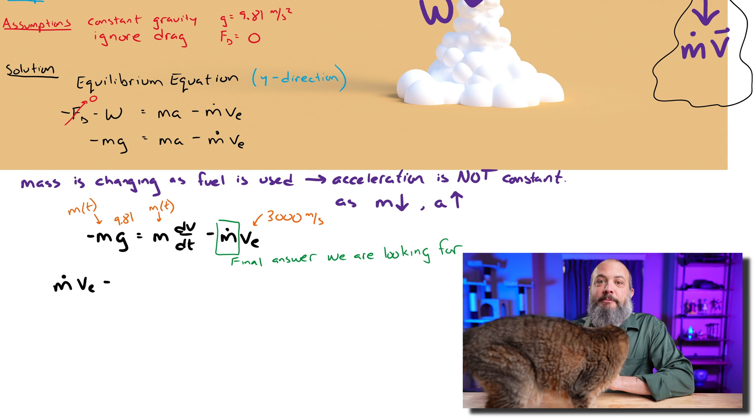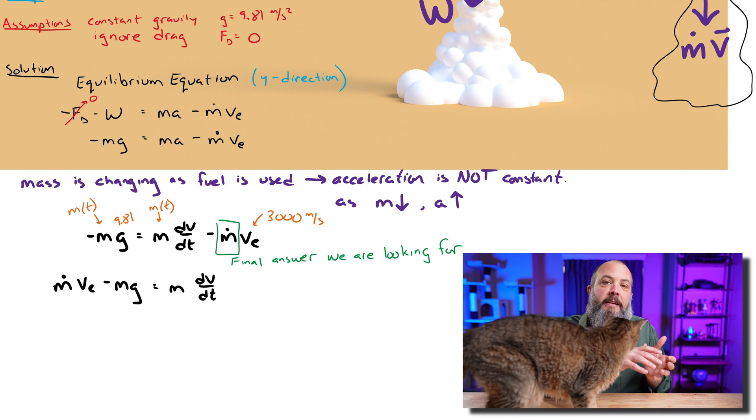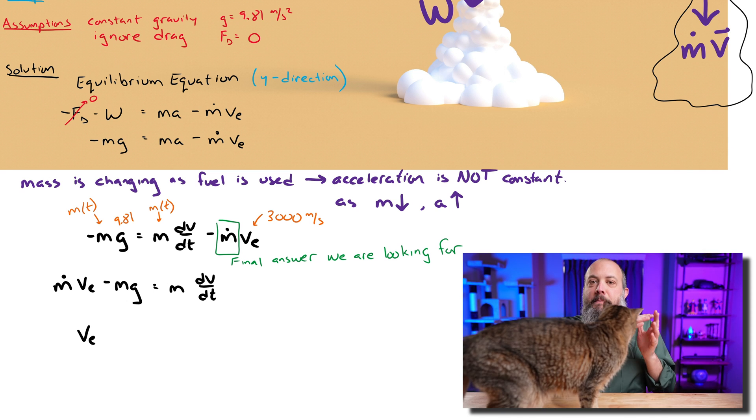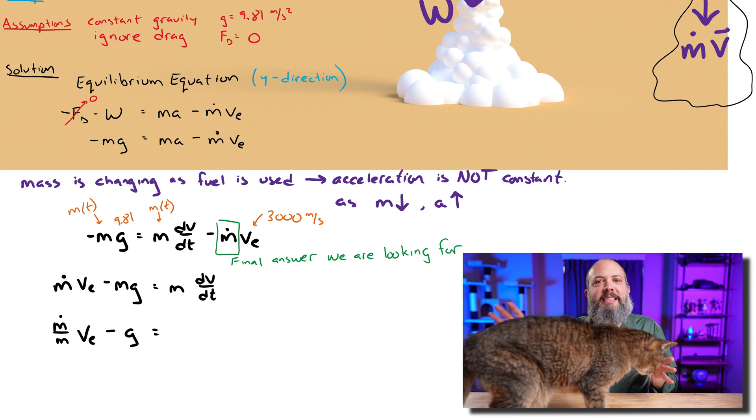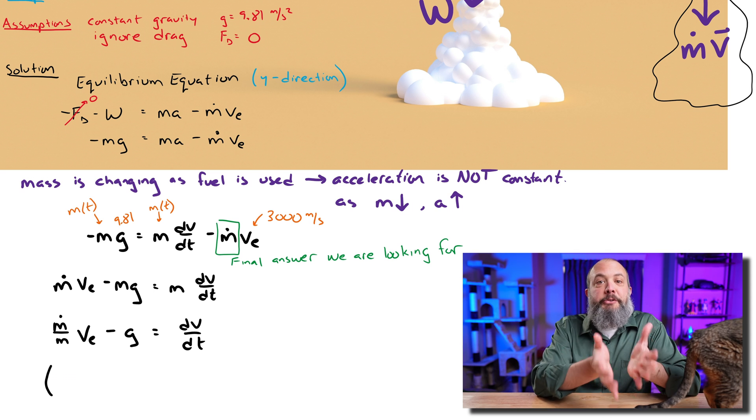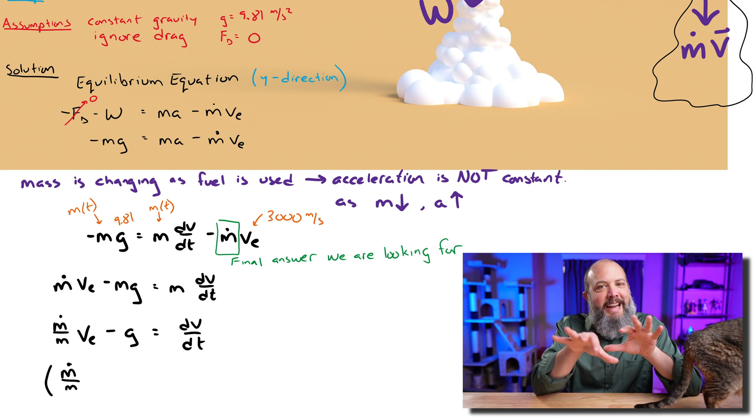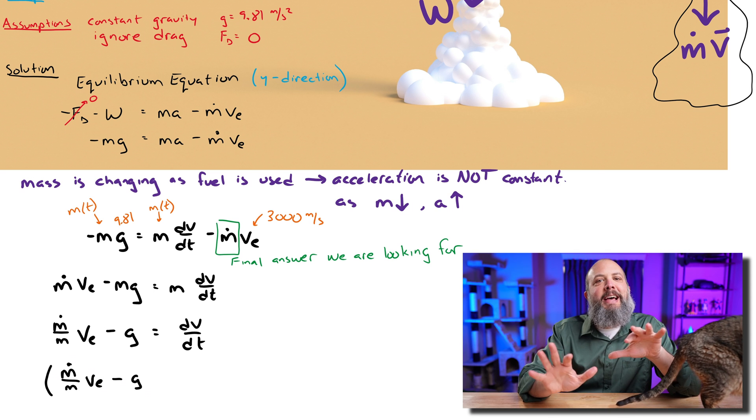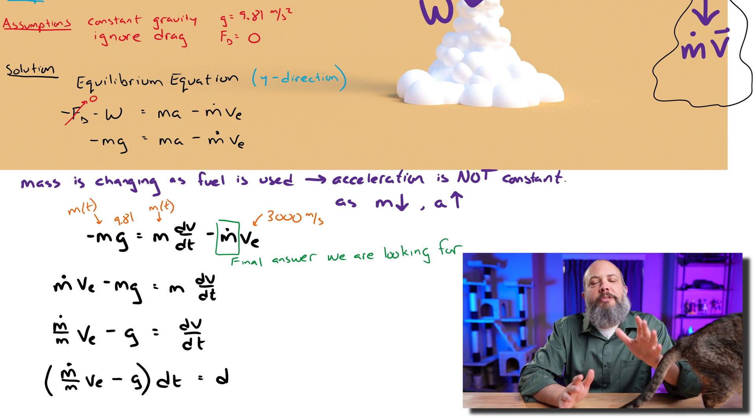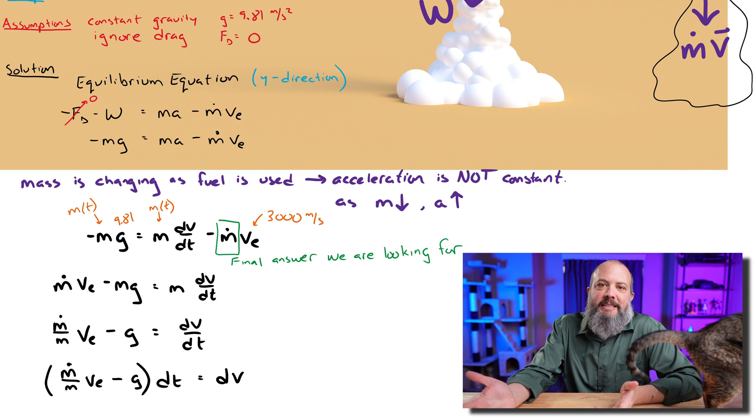So I start off by adding m dot v to move that over to the left. And then I divide by mass to get dv/dt by itself, multiply dt over to the right hand side. And now you can see that this is set up looking like two integrals, one is going to be an integral with respect to time, one an integral with respect to velocity.